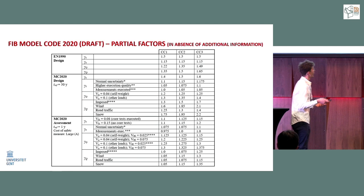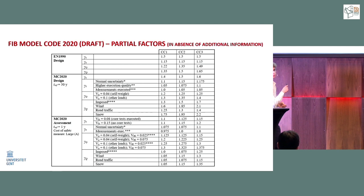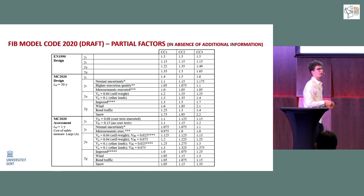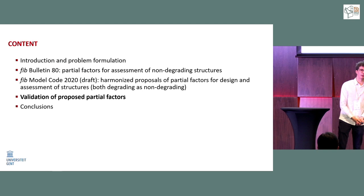At the top of the table are the classical partial factors for the design case following the Eurocode, organized by consequence classes already defined in current guidelines. Below that are the Model Code 2020 formula-based partial factors for design, and also the new factors for assessment using a one-year reference period.